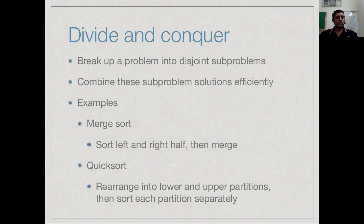Quick sort has a different strategy — it tries to avoid the merging step. You rearrange the original list so that you have a lower and upper partition with respect to a pivot. Having rearranged them, you sort the lower and upper halves independently without needing to merge. There is a cost involved with setting up subproblems and a cost for combining them, and if both are efficient, the overall solution is much better than a direct approach.